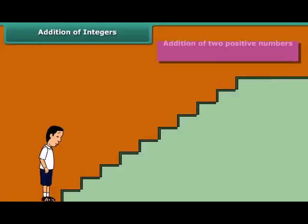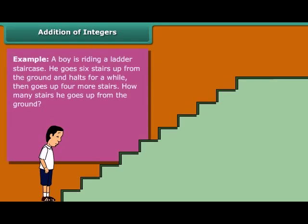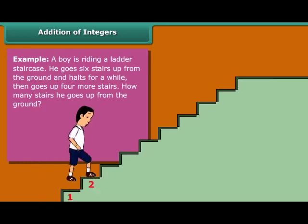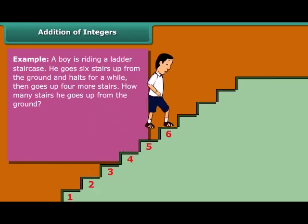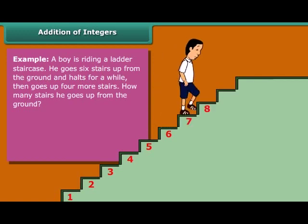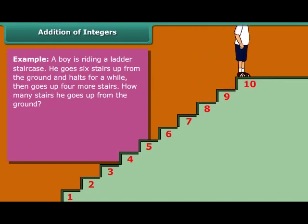Addition of two positive numbers. Example: A boy is riding a ladder staircase. He goes six stairs up from the ground and holds for a while. Then goes up four more stairs. How many stairs he goes up from the ground? Plus six plus plus four is equal to plus six plus four which equals plus ten.